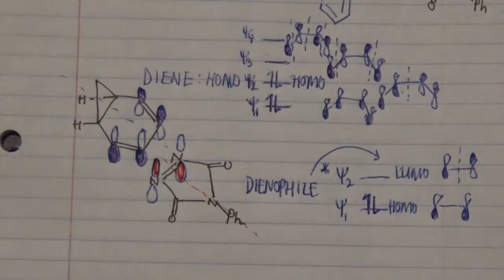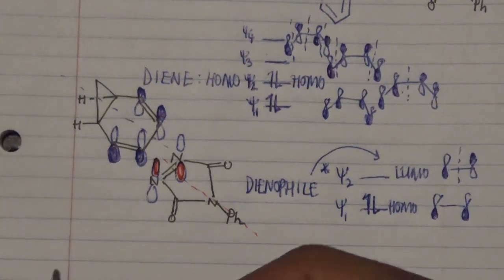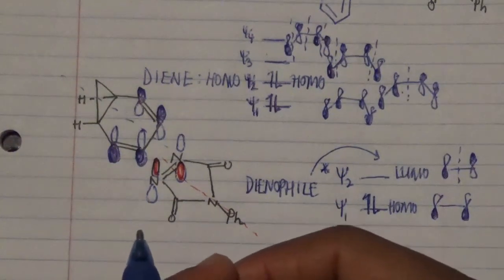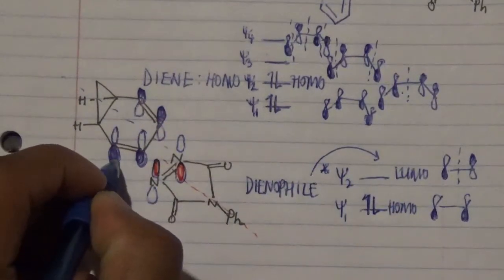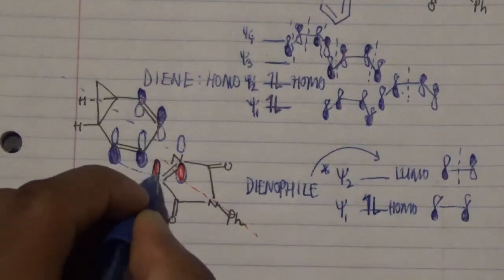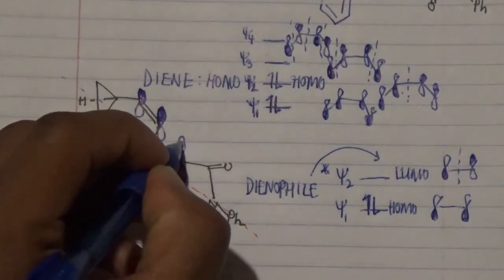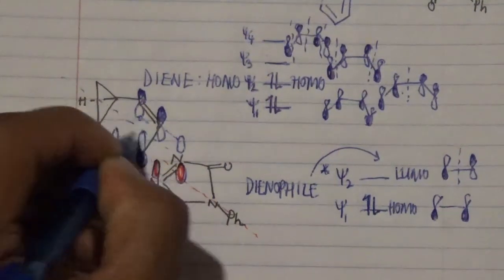So now, therefore, if you want to do an orbital overlap that leads to the formation of a sigma bond translating from the pi bond, what we do get is that this orbital over here overlaps with that orbital over here, and this orbital over here overlaps with that orbital over there.